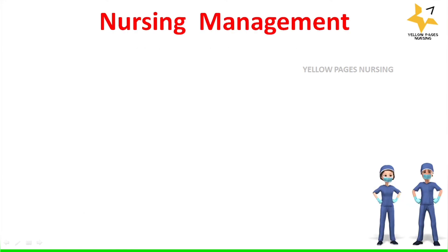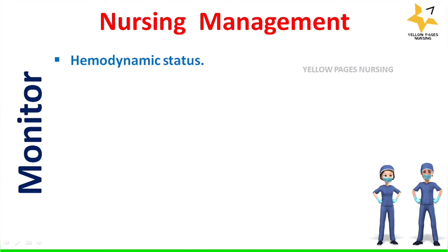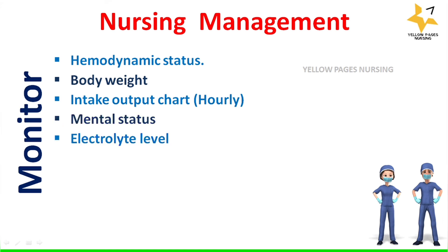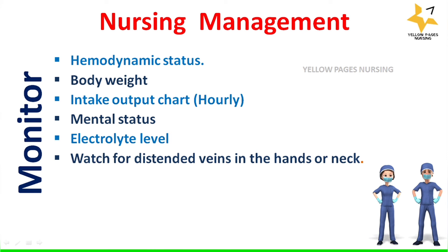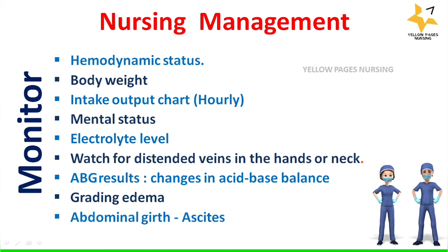Nursing management of hypervolemia includes monitoring hemodynamic status, body weight, intake and output chart hourly, mental status, electrolyte levels, watching for distended veins in the hands or neck, ABG results, monitoring for changes in acid-base balance, grading edema, and abdominal girth to rule out ascites.